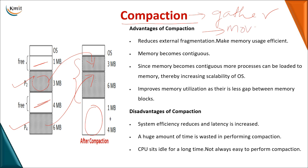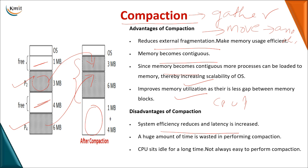Compaction requires two steps: gathering all empty locations together, and relocating processes — since moving a process changes its memory addresses. The advantage of compaction is it reduces external fragmentation, provides contiguous memory, and improves memory and CPU utilization. However, the CPU spends time moving processes rather than executing them, which is a significant overhead.